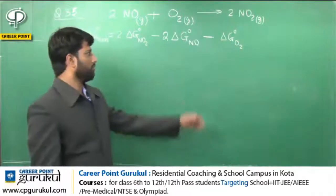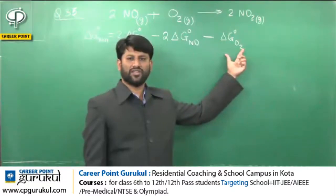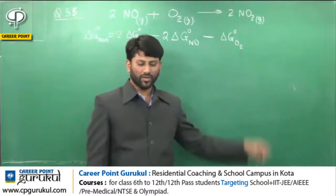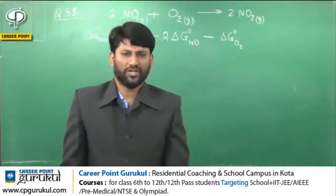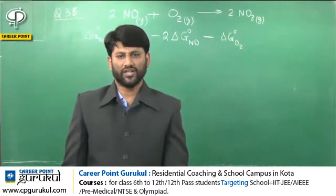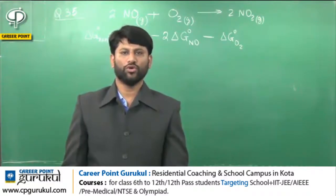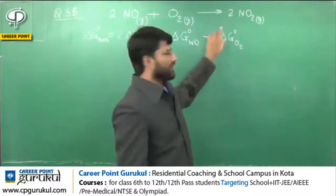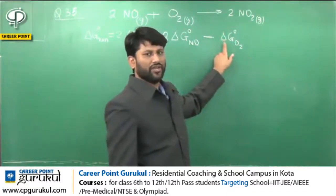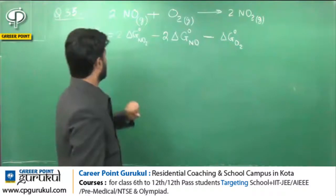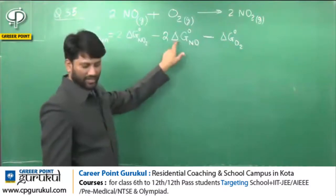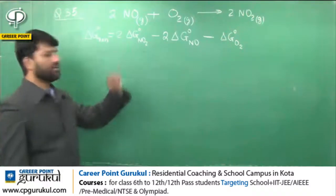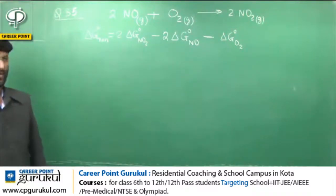O₂(g) Thermodynamically Most Stable, Easily Available, Economical Allotrope है Oxygen का। Most Thermodynamically Stable और Easily Available Economic Allotrope जो होते हैं उनकी Standard Enthalpy of Formation और Standard Free Energy Change दोनों 0 होती है। तो O₂ की Standard Free Energy Change 0 है। NO की Standard Free Energy Change question में दे रखी है और NO₂ की Standard Free Energy Change पूछी है।